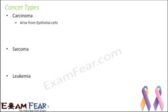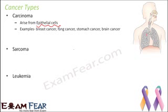Carcinoma involves cells which arise from the epithelial cells. Any growth seen in the epithelial cells or epithelial tissues falls under the category of carcinoma, and carcinoma is the most common type of cancer in human beings. Some examples of carcinoma are breast cancer, lung cancer, stomach cancer, brain cancer, skin cancer, and cervical cancer. In fact, about 80% of tumors are carcinomas, making it far more common than sarcoma or leukemia.